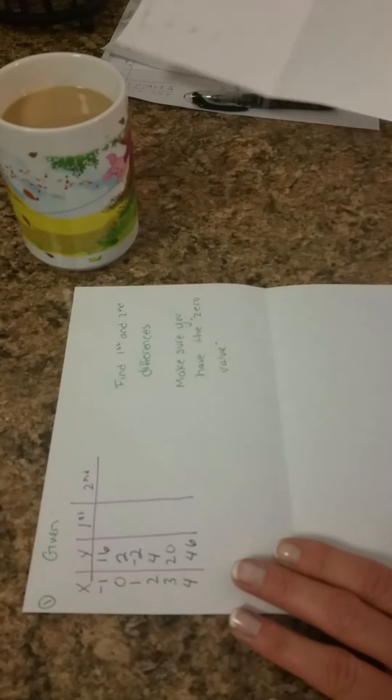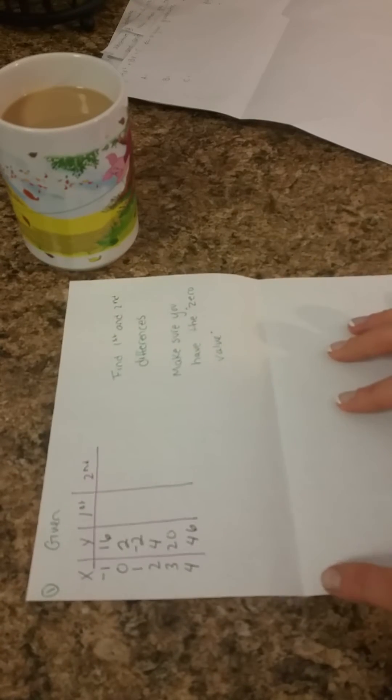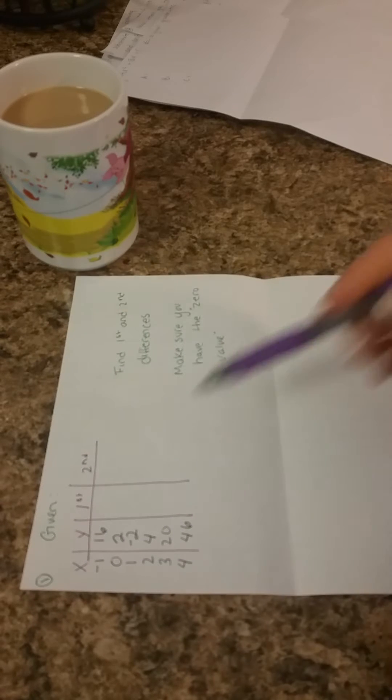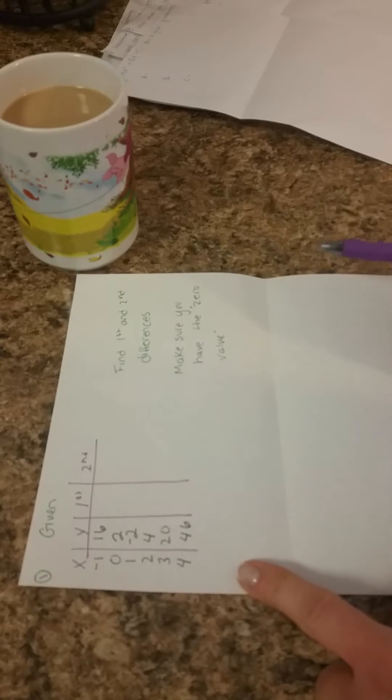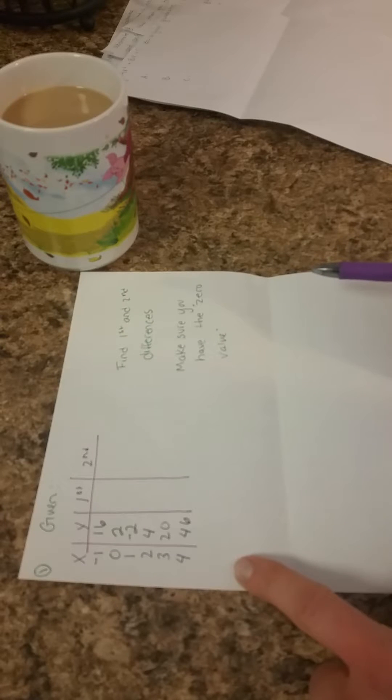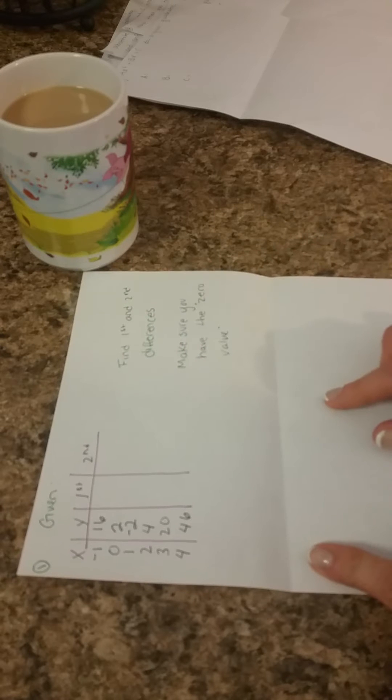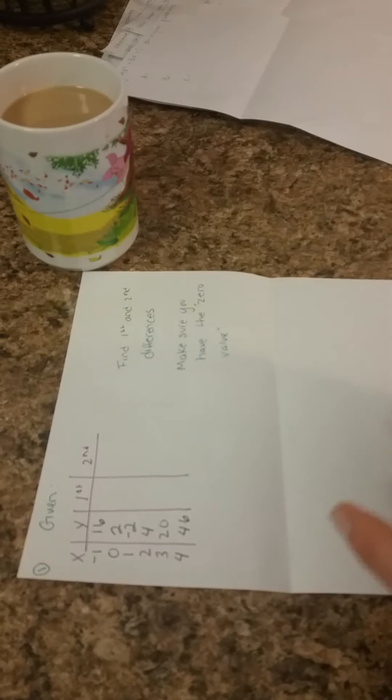After that, let's use this quadratic table as our example. So I'm given this table. Take a minute to copy it. Hope you can see it clearly. And I know that I need to find my first and second differences and also make sure I have my zero value.